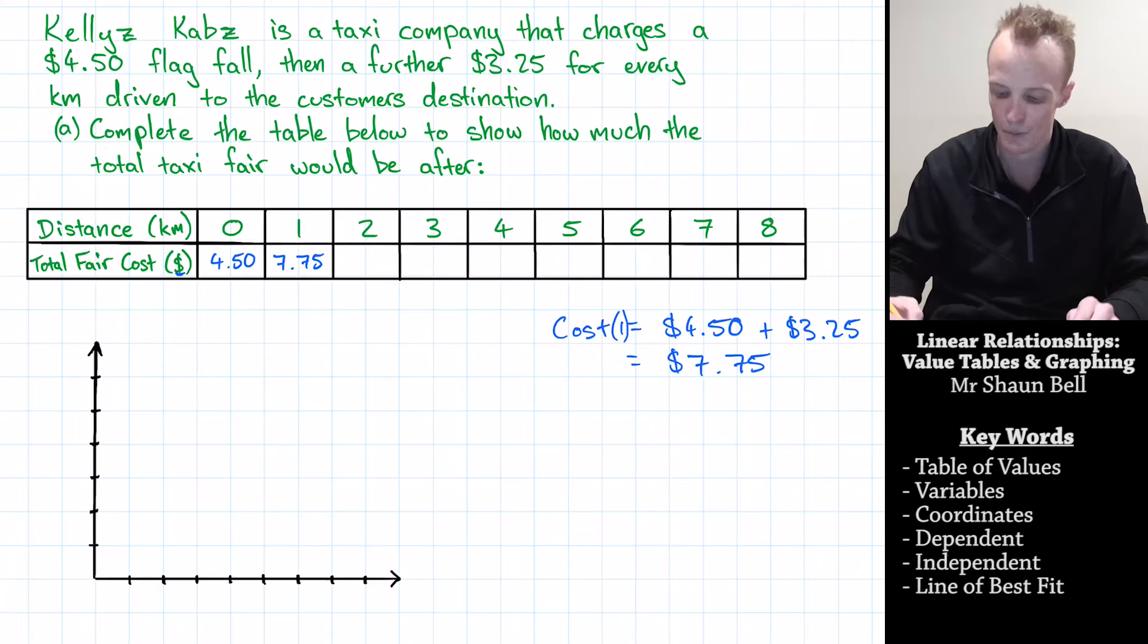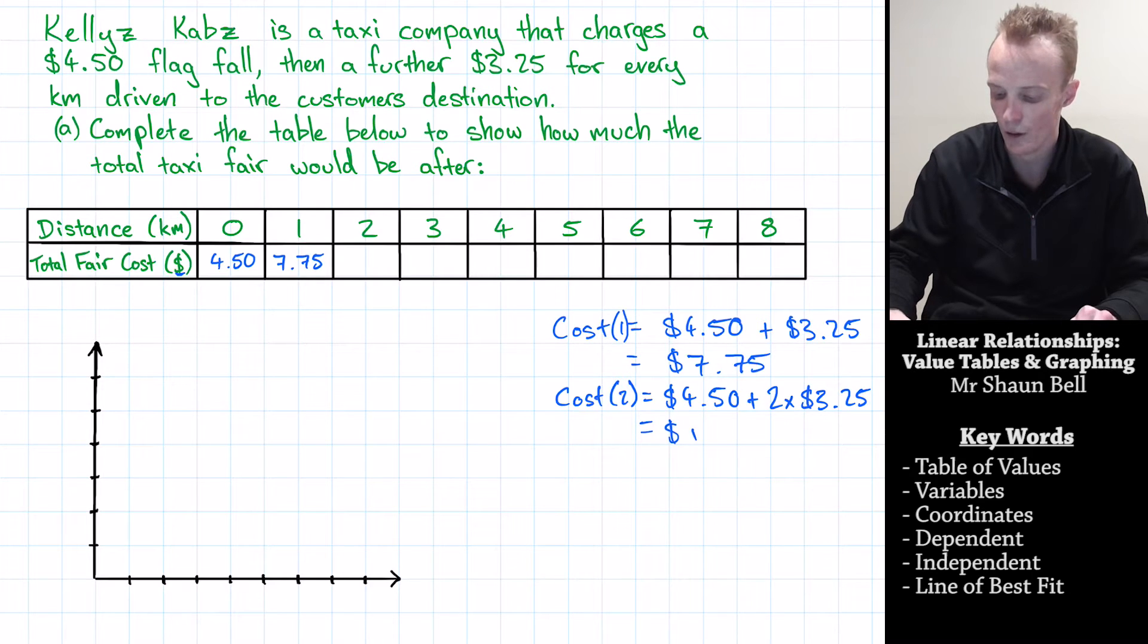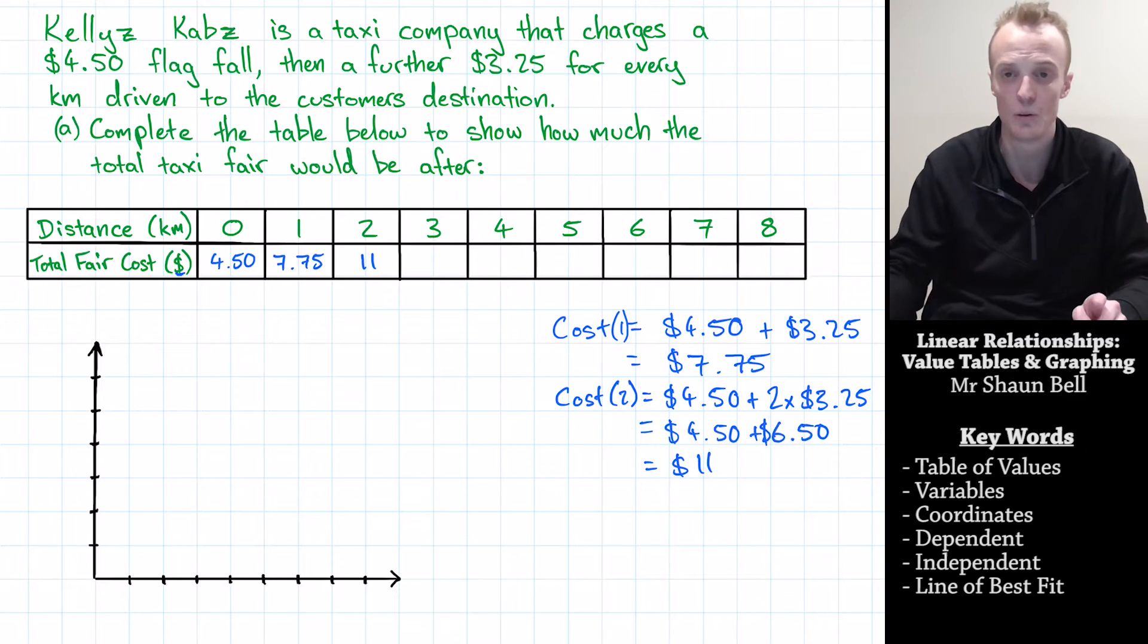Alright, so what about two kilometres? Well, our cost for two kilometres is going to be our flag fall again of $4.50 for getting inside the cab plus an extra two lots of $3.25 for each kilometre. Now that equals $4.50 plus $6.50, which in total equals $11. Now we enter that $11 under the two kilometre heading. And then we repeat that until we complete the table. But I'm going to fast forward that.